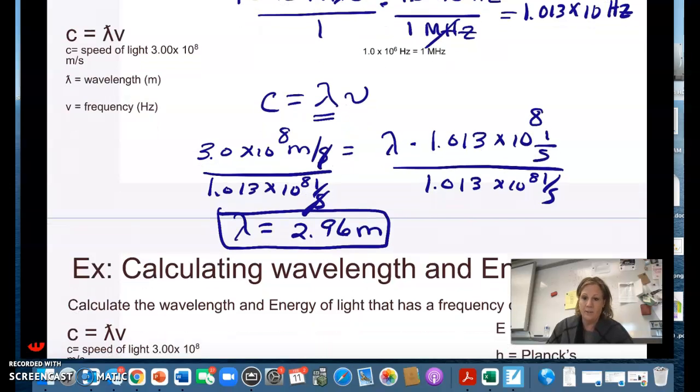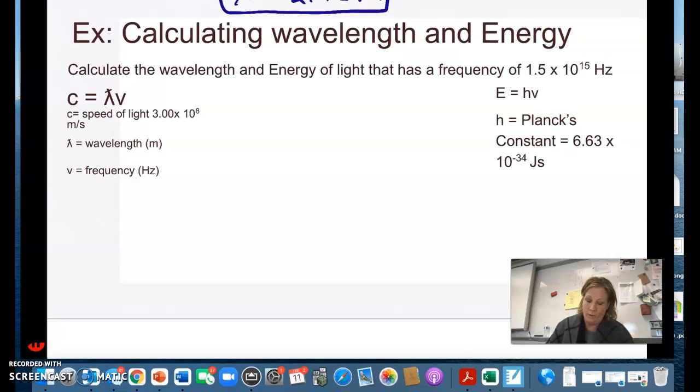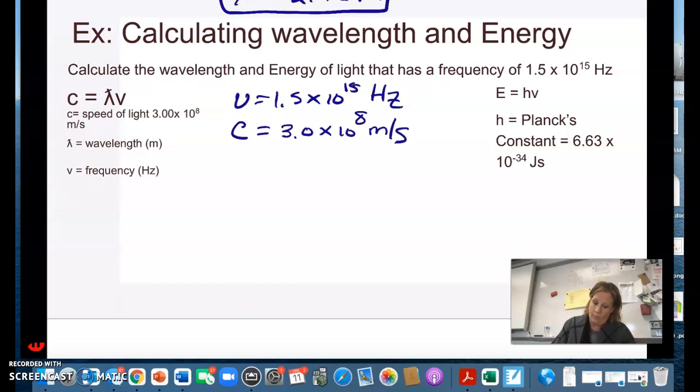And then the last question we're going to look at a wave that has a frequency of 1.5 times 10 to the 15th hertz and it is traveling at the speed of light. So we're going to calculate the wavelength first.